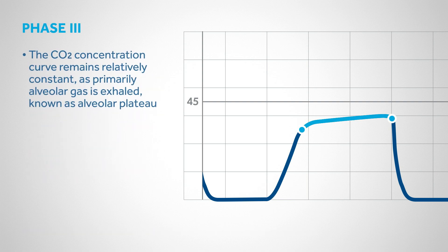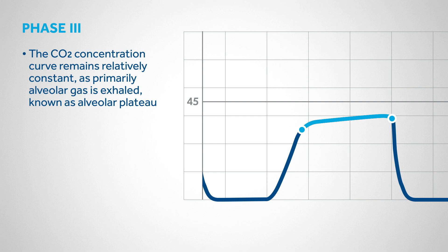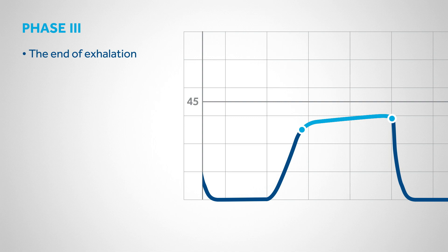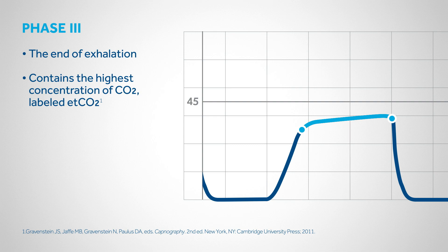During Phase 3, the carbon dioxide concentration curve remains relatively constant as primarily alveolar gas is exhaled, which is known as the alveolar plateau. The alveolar plateau is flat with a slight upward tilt toward the end. The end of Phase 3 is the end of exhalation. The end of the breath cycle contains the highest concentration of CO2, which is labeled the end-tidal CO2 — the number seen on the monitor.